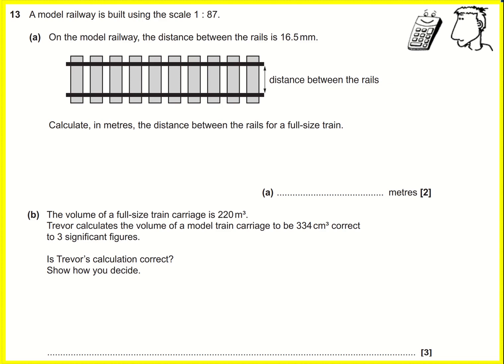Starting with the distance between the rails at 16.5 millimeters, we want to work out what it is in the actual train rather than just the model. So we're going to do 16.5 multiplied by 87.